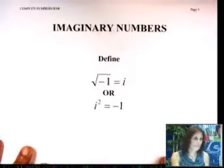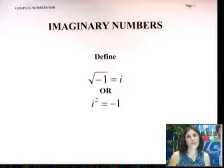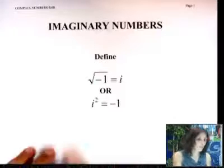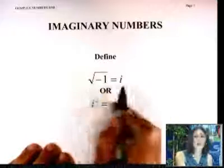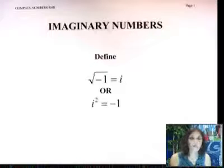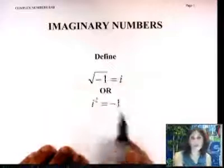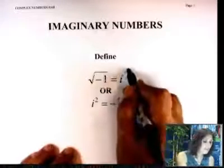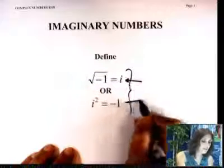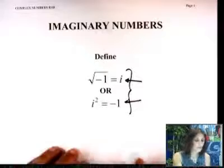Alright, we will start with imaginary numbers. We'll just define it, so this is intermediate algebra level. We are going to define i as the square root of negative 1. Remember, up until now we were saying don't take square roots of negative numbers, but now we will. So if i is the square root of negative 1, that means i squared has to equal negative 1. Please remember either that, or both — you're going to have to remember that.